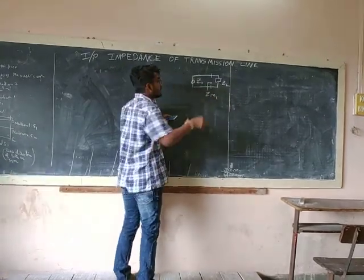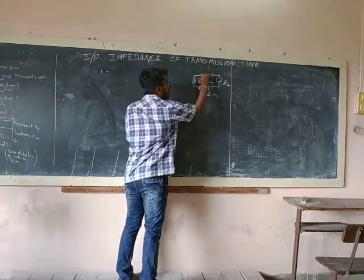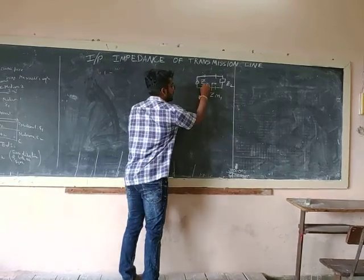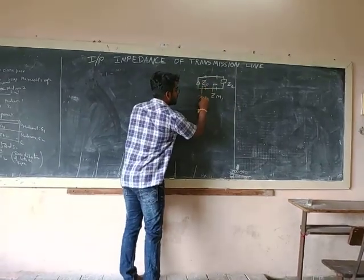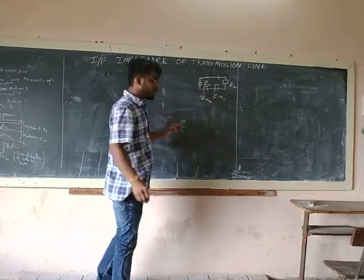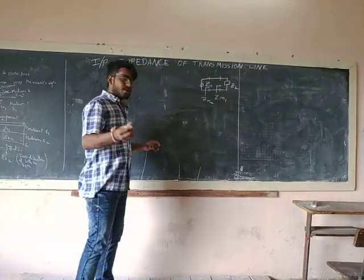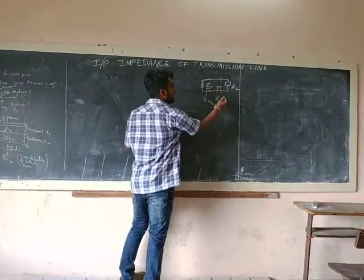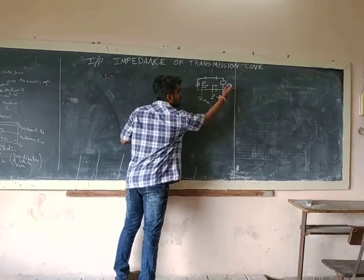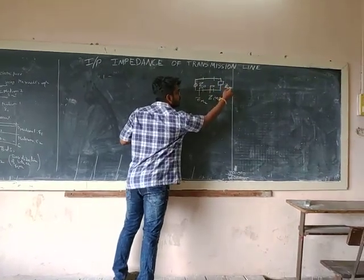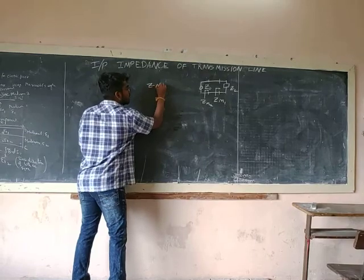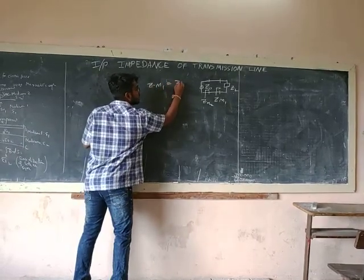And someone asks us, what is input impedance from this point? Let's assume this as Zn2. So, as we can see from this point, the input impedance is Zn1 equal to Zn.